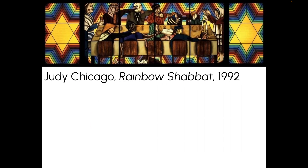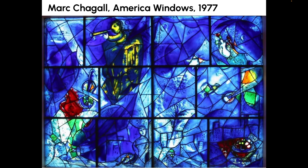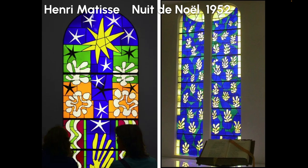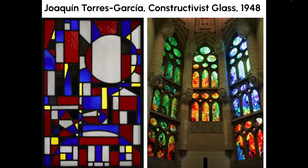Judy Chicago created a scene called Rainbow Shabbat. Marc Chagall created an image called America Windows. Marianne Peretti created windows for the Cathedral of Brasilia in 1989. Henri Matisse created Nuit de Noël in 1952. Joaquin Torres Garcia created constructivist glass windows inside a building — a close-up detail on the left shows panels of which there are very many.